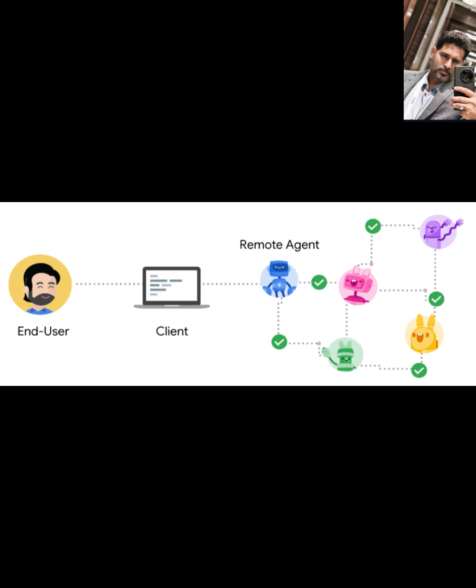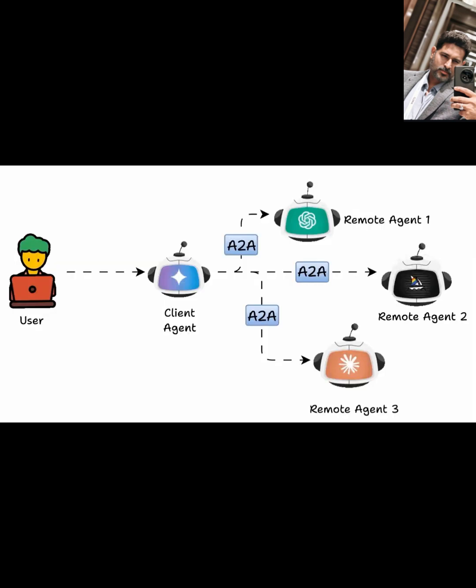A2A's communication stack leverages web-native technologies for seamless integration. It uses HTTPS with modern TLS encryption for secure transport, JSON-RPC 2.0 for structured method invocation like task/send for synchronous tasks, and server-sent events (SSE) for real-time updates in streaming scenarios via task/sendsubscribe.